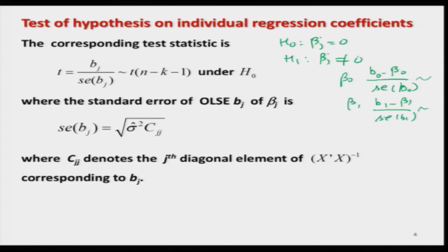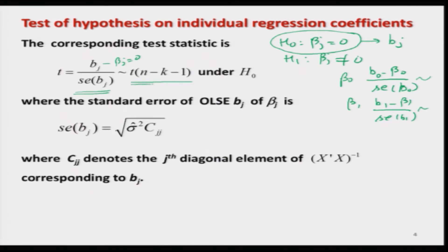When testing H₀: βⱼ = 0, where βⱼ is estimated by OLS as Bⱼ, we use the t-statistic — because we only have a sample and nobody informs us of the value of σ², so we must estimate it from the sample. The t-statistic is: t = Bⱼ / SE(Bⱼ), and this follows a t distribution with n − k − 1 degrees of freedom.